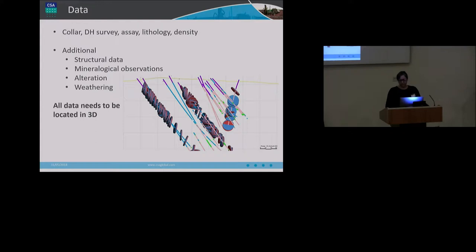As a minimum for drill hole data, be it air core or diamond drilling, collar, downhole survey, assay and lithology information should be collected. It's a common misconception that that's all that's required. Additionally, and in no particular order, you should capture density, structural data, mineralogical observations, alteration styles, weathering styles, and whatever else is important for your deposit, perhaps magnetic susceptibility for iron ore or graphite flake size.